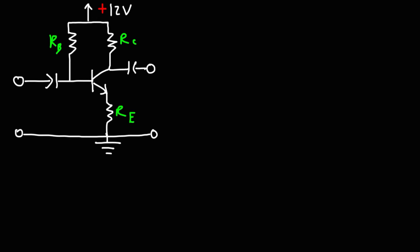In this video, we're going to talk about how to solve the emitter feedback bias circuit. We have a 12-volt voltage supply source connected to this circuit. RC is set to 200 ohms, RE is also set to 200 ohms, RB is set to 110 kilohms, and the HFE, or beta, of the NPN transistor is 200.